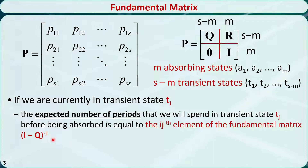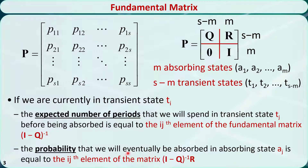In this introductory course, we just provide these results without any proof. If we are currently in transient state Ti, then the probability that we will eventually be absorbed in an absorbing state Aj is equal to the ij's element of the fundamental matrix times R.